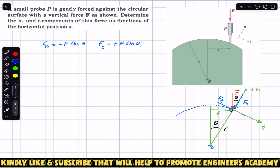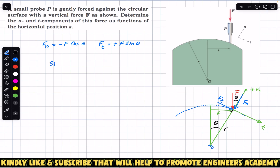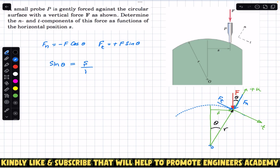Since the problem asks us to write the n and t components as a function of the horizontal position s, we must write sin(θ) and cos(θ) in terms of s. Applying sine to the right angle triangle, sin(θ) equals the opposite side divided by the hypotenuse, so sin(θ) = s/r. Using the trigonometric identity sin²(θ) + cos²(θ) = 1, we need to express cos(θ) in terms of s.